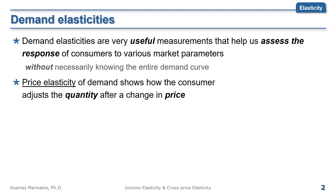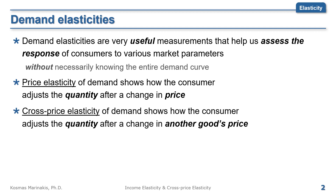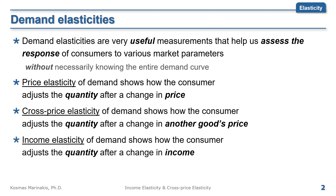Price elasticity of demand shows how the consumer adjusts the quantity after a change in price. Cross-price elasticity of demand shows how the consumer adjusts the quantity after a change in another good's price. And income elasticity of demand shows how the consumer adjusts the quantity after a change in income.